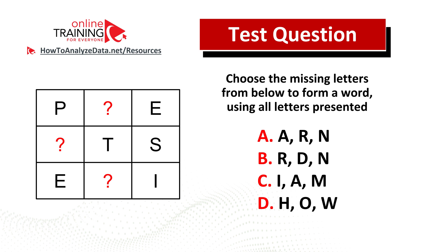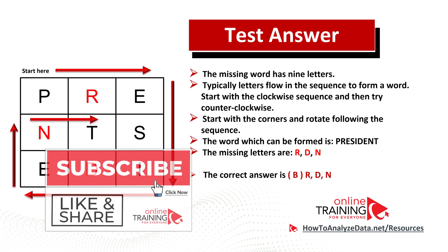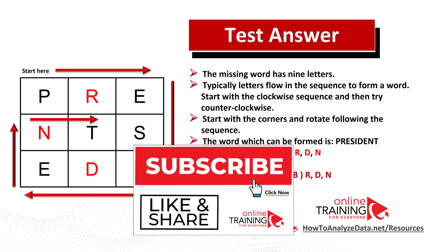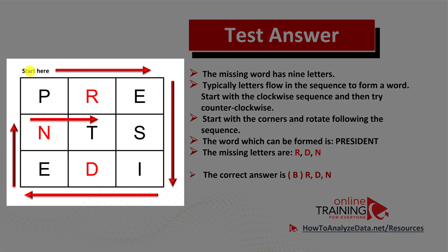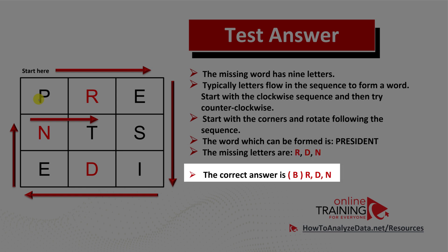Did you figure out the solution? Let's continue to see how we can solve this challenge together. Based on the instruction in the question, the word has 9 letters. Typically, letters in the sequence flow to form a word in these types of questions. In this particular question, you need to start in the upper left corner, then flow from left to right, then from top to bottom, from right to left, and again into the middle row. Once you do that, you will see that the word PRESIDENT can be formed. So the missing letters are R-D-N, and the correct choice here is choice B.